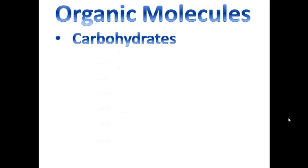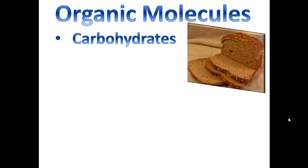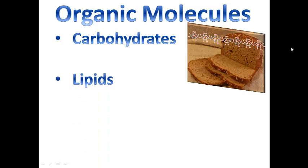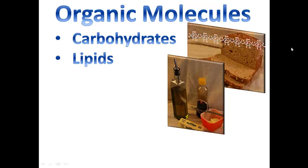Carbohydrates, which we generally associate with foods like bread and starches, typically are made of ring-like structures, one attached to another, to another, to another. Whereas lipids, which we associate with oils and fats, generally speaking are going to be these long hydrocarbon chains, often two or three associated together.